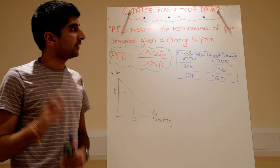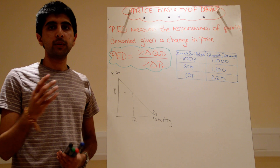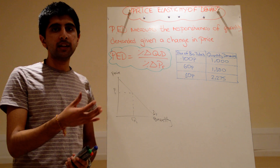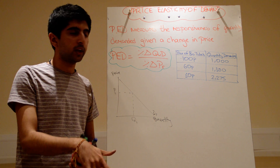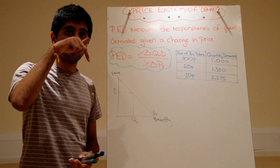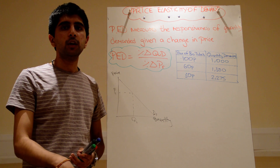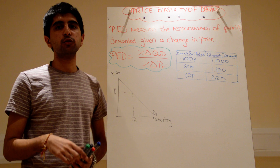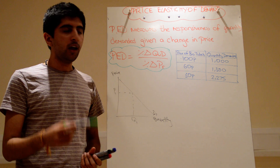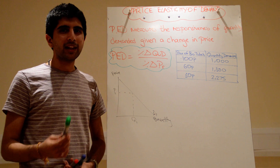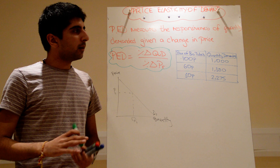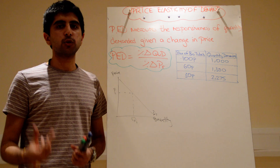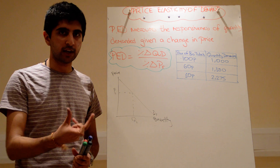We know the law of demand tells us that when the price of a good goes up, quantity demanded for that good will go down. It also tells us when the price for a good goes down, quantity demanded will go up. There's a basic inverse relationship between price and quantity. But in reality, what's more useful is to know exactly how much quantity demanded changes when the price changes.